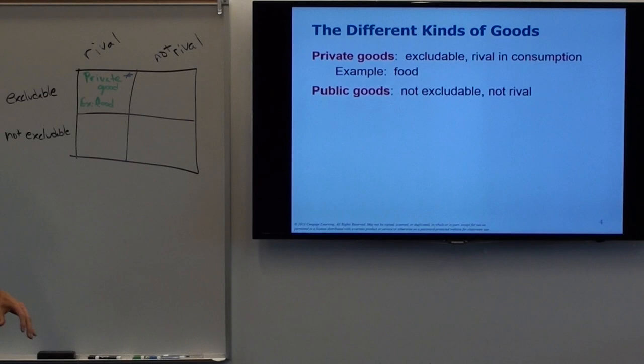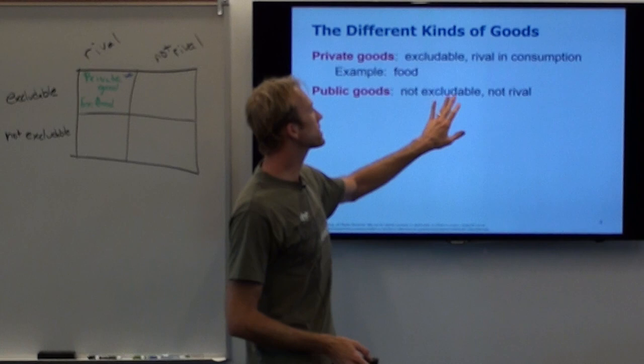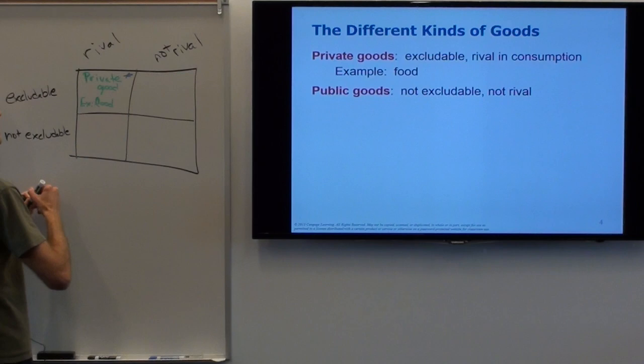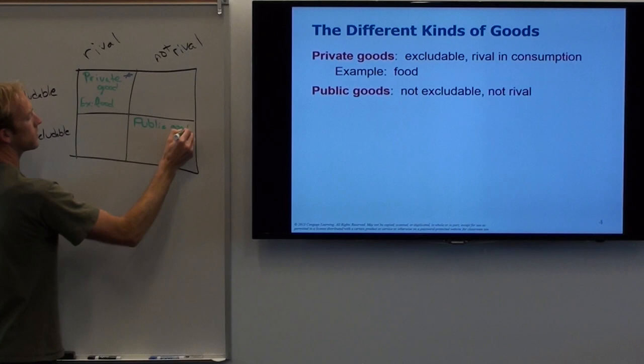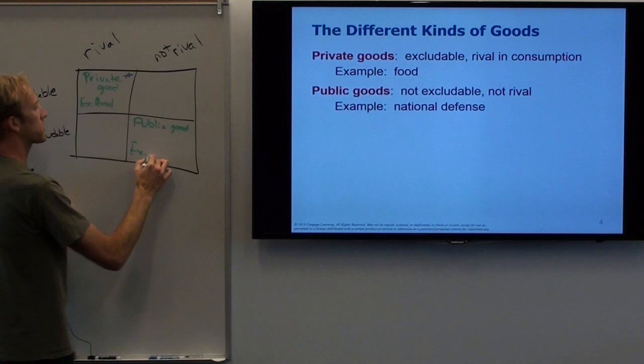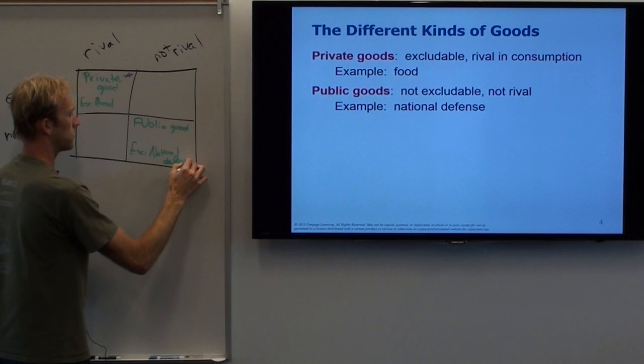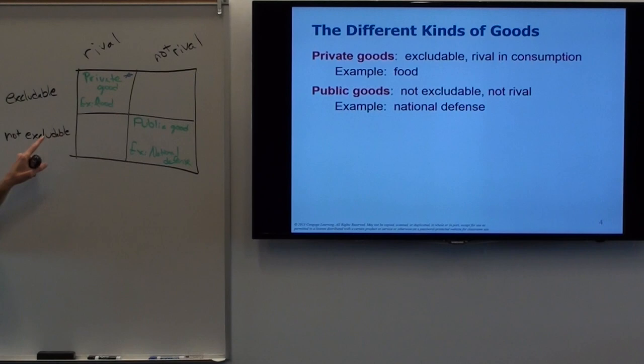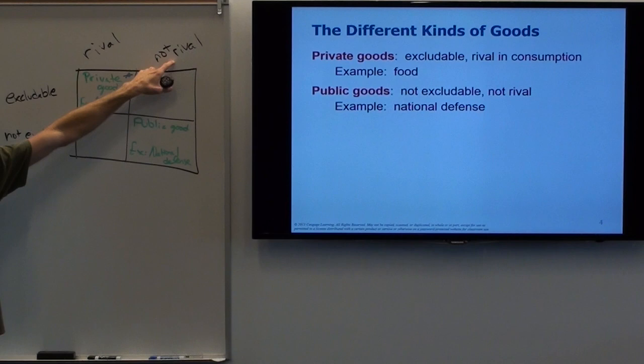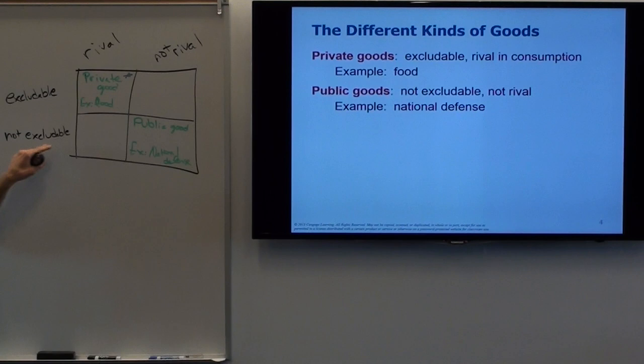On the chart we're classifying goods by excludable or not excludable, and by rival or not rival. A public good is not excludable and not rival. The example is national defense: when you use up national defense, it's not rival — I can still use it at the same time. And it's not excludable — I can't keep you from being defended by national defense.